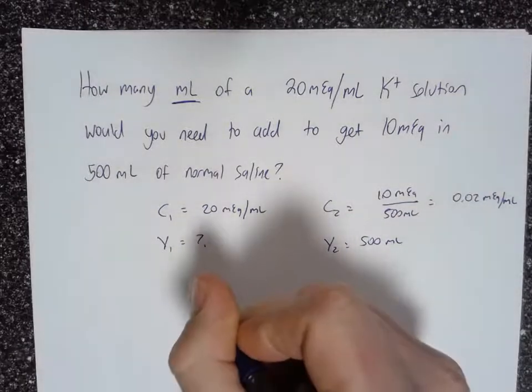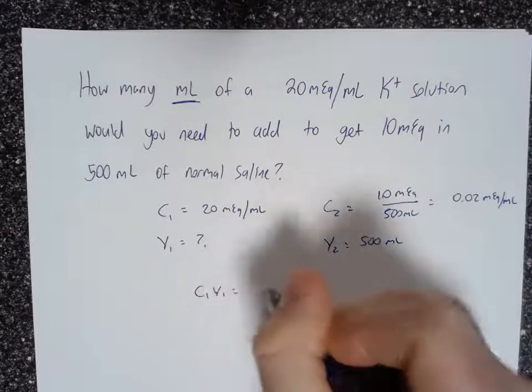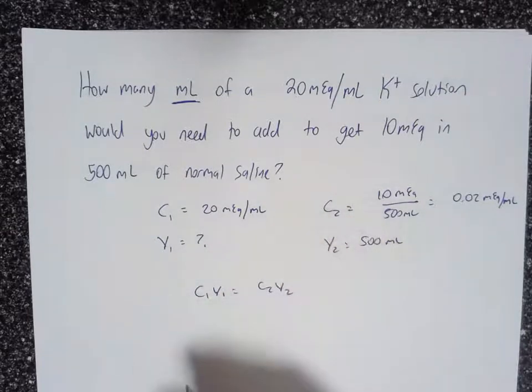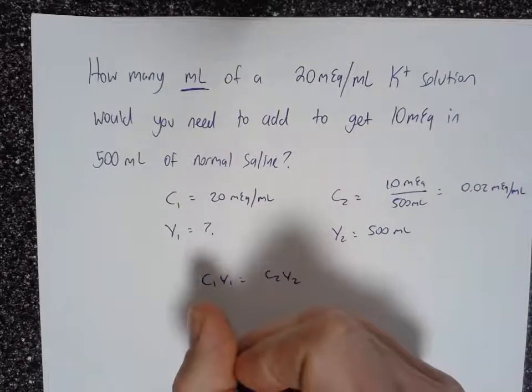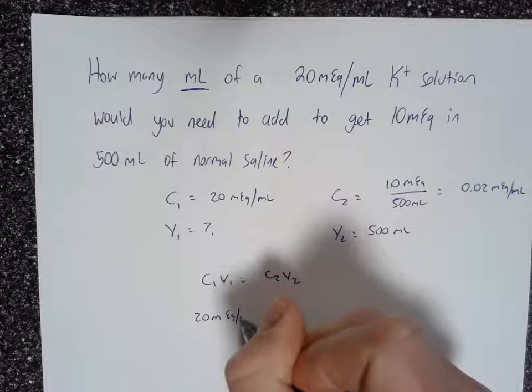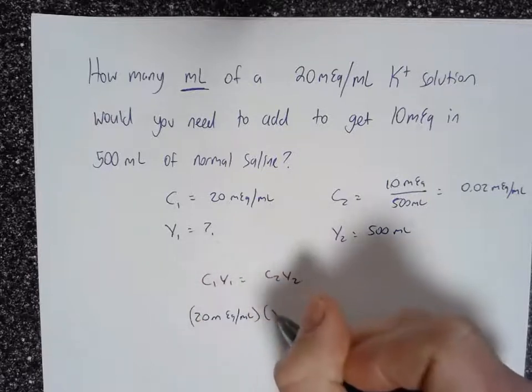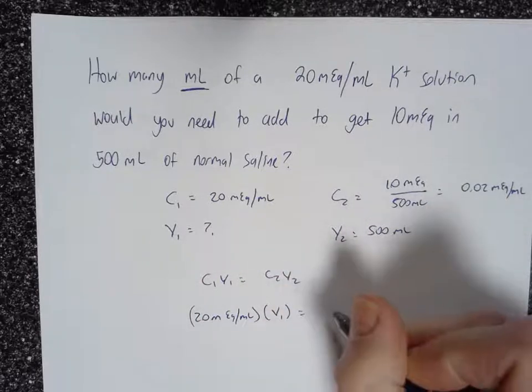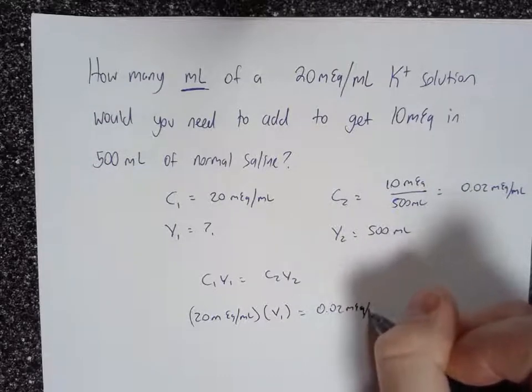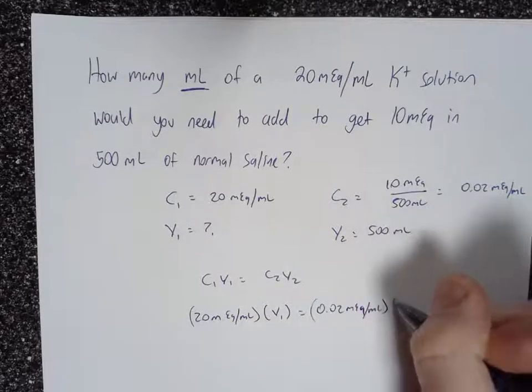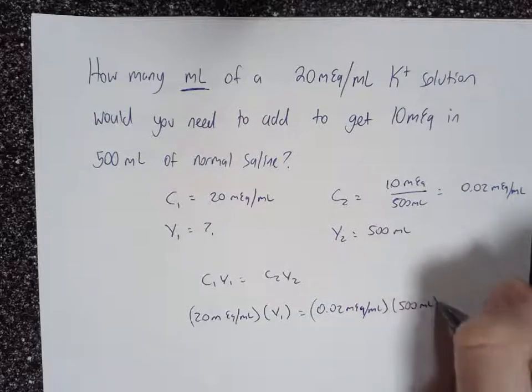Okay so we set this up, C1 V1 equals C2 V2, this is going to be the standard dilution equation, and then just plug and chug. 20 milliequivalents per milliliter times V1 is equal to 0.02 milliequivalents per milliliter times 500 milliliters.